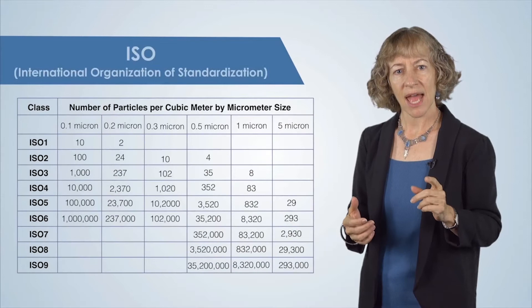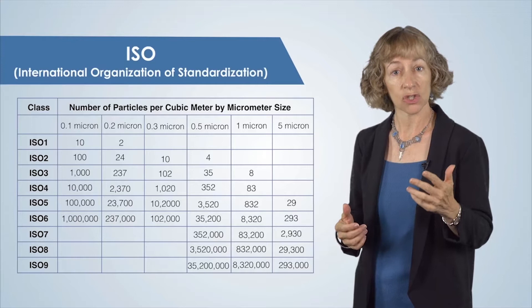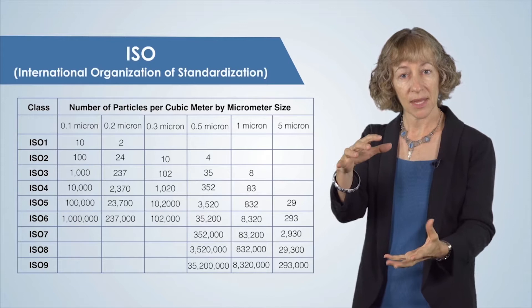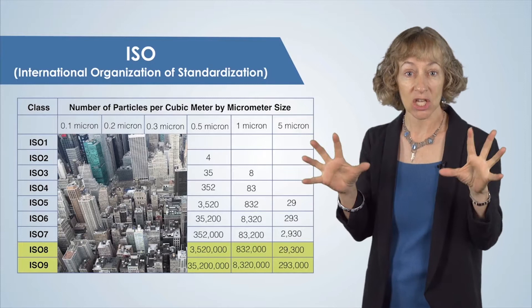Clean rooms have an ISO, or International Organization of Standardization, rating based upon the number of particles per cubic meter of air. As an example, the outdoor air in a typical city environment contains millions of particles per cubic meter that are a half a micron and larger in diameter.